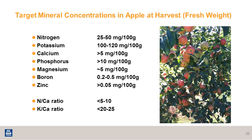At Yara, we have many years of data from research trials, and we have determined some parameters for apple nutrients. These are nutrients measured in the fruit as mg per 100 g fresh weight — fairly general numbers, not specific to any variety. At least for calcium, they recommend the concentration in the fruit to be above 5 mg per 100 g fresh weight. More importantly, the ratios matter: the nitrogen-to-calcium ratio should be between 5 to 10 mg, with lower being better. The same applies to the potassium-to-calcium ratio, where 20 to 25 is good, but lower is better.